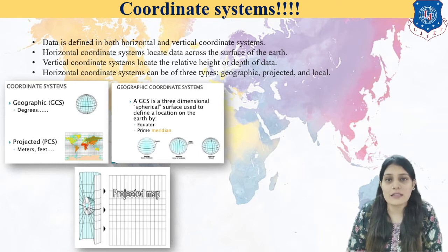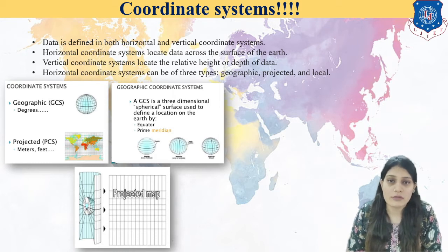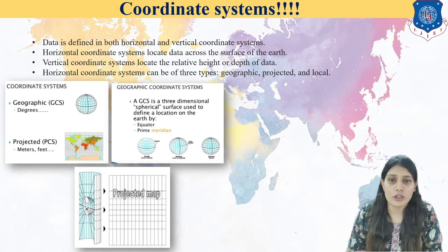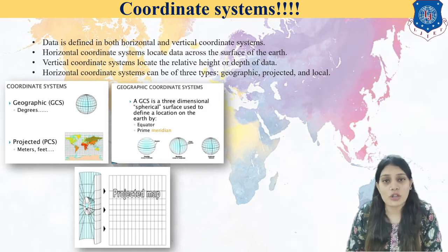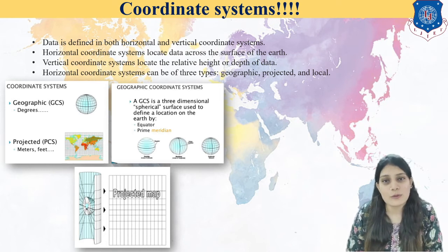The geographic coordinate system uses degrees, minutes, and seconds. When we say projected coordinate system, its unit will always be meters, square miles, yards, acres, inches, feet — whatever unit conversion you require. So we are transferring latitude and longitude — degrees, minutes, seconds — into units of square kilometers. That is converting from a geographic coordinate system to a projected coordinate system.